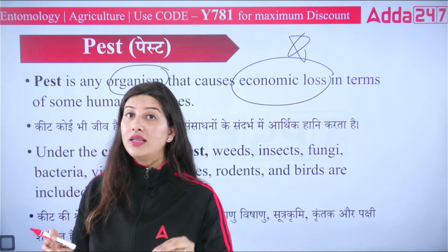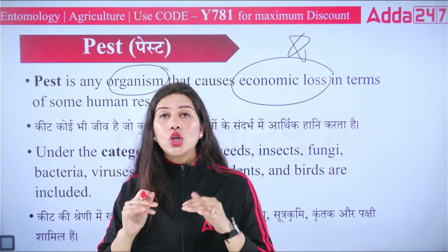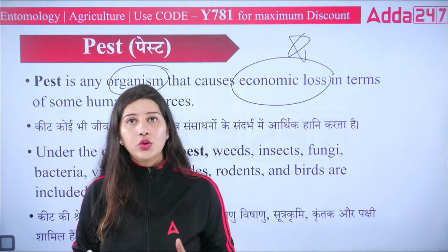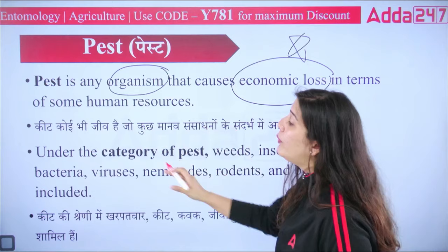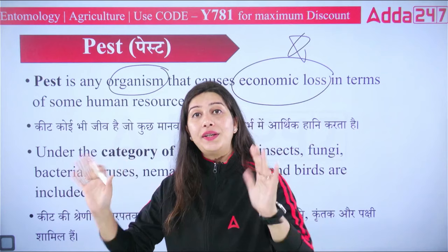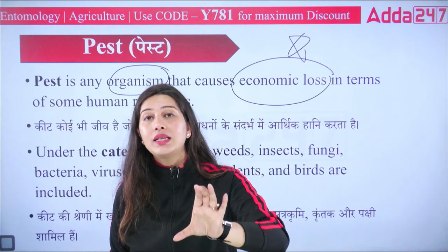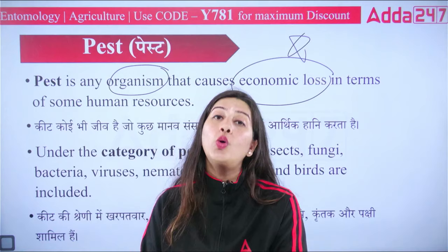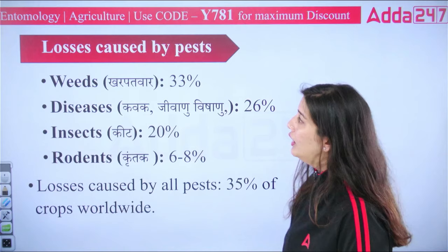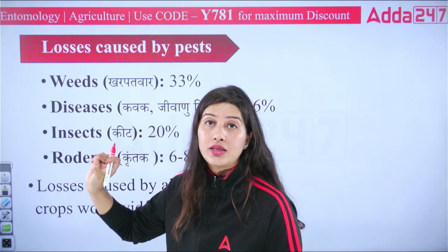But if it is a cabbage butterfly or a diamondback moth whose caterpillar or larva eats crops extensively — that is economic damage. So not every butterfly is a pest. Under the category of pest: weeds, insects, fungi, bacteria are included. Pests are not always insects. Plants, fungi can also be pests. Insects that cause significant economic damage are classified as insect pests.